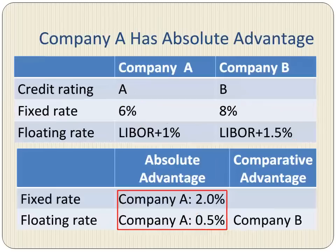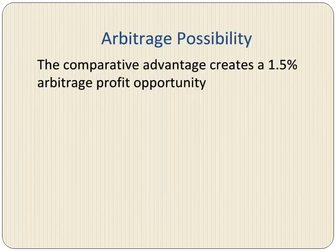Thus, when we compare the two risk premiums, Company B has a competitive advantage if it borrows at the floating rate. Had risk premiums at both rates been the same, Company B would not have a competitive advantage. The competitive advantage creates an arbitrage possibility of 1.5% when both companies borrow independently and enter into a swap agreement.